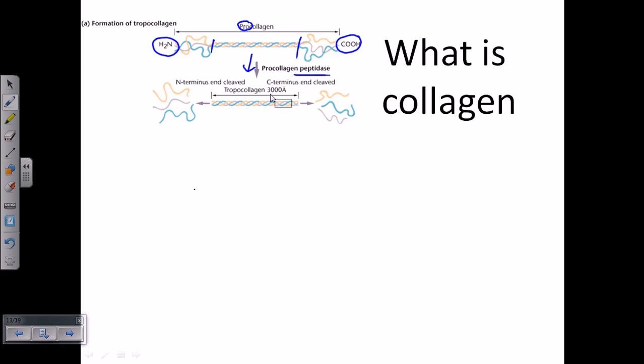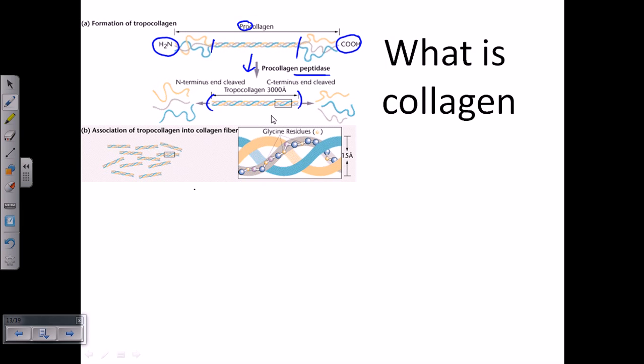As it cleaves all those N-terminal and C-terminal parts of the pro-collagen molecule, it converts the pro-collagen into 3000 angstrom long tropocollagen. Many tropocollagen molecules will arrange and associate with each other and then are converted into collagen fiber during different interactions.